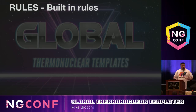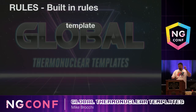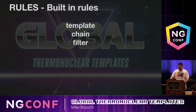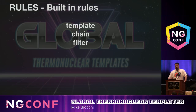To get you started, Schematics provides some built-in rules to allow you to create your custom rules more easily. Template gives you the ability to render a file you've already created on disk using an EJS language templating structure to replace things within there — take your blueprint, modify it with whatever options you have, and output it. Chaining is the ability to take multiple rules and process them in order sequentially. Filter gives you the ability to exclude files when you're processing — for example, if you specify that you don't want a test file, you can filter it out based on a predicate function.